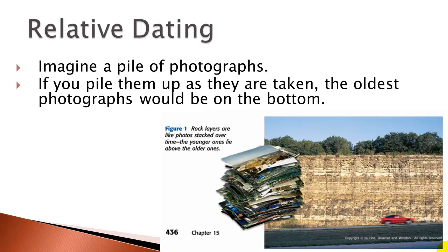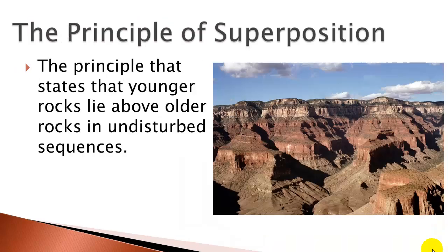After a while, if you wanted to find the first photos that were taken or the oldest photos, you would look at the bottom of the stack. Rock layers are the same. The principle of superposition states that the oldest rock layers are at the bottom and the youngest rock layers are at the top. This makes sense because deposition is always occurring from the top down, and according to the principle of original horizontality, rock layers are deposited horizontally, so over the ages these rock layers gradually build up.